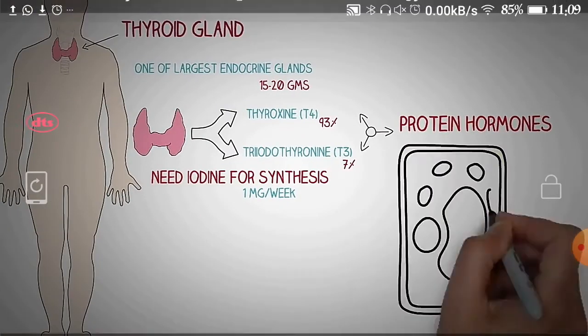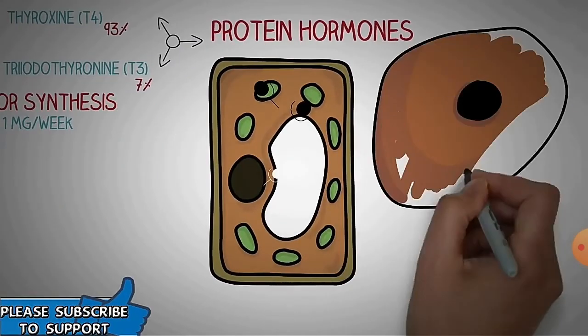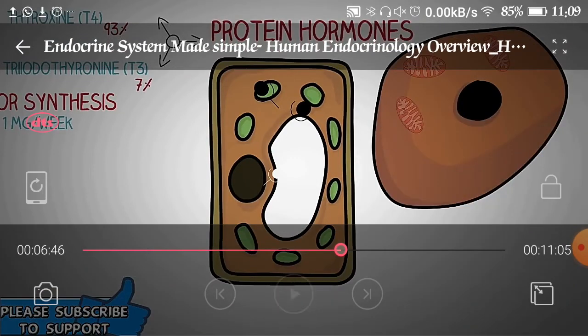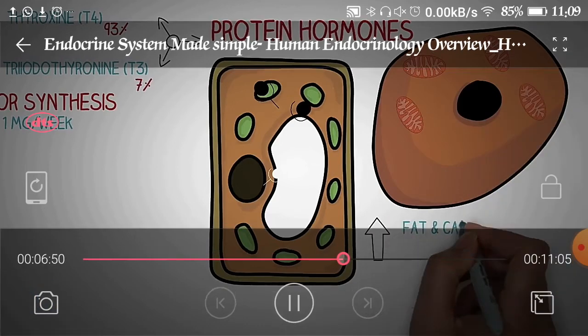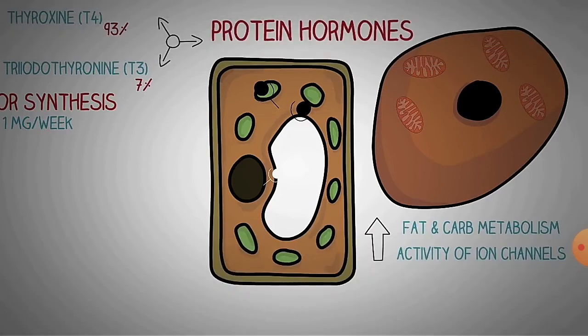Protein and thyroid hormones are responsible for various functions in the body. They are responsible for production of mitochondria throughout the body, and mitochondria are responsible for ATP generation. These hormones are also responsible for fat and carbohydrate metabolism and activity of ion channels. They are available in all cells throughout the body, controlling the metabolism of all body cells.